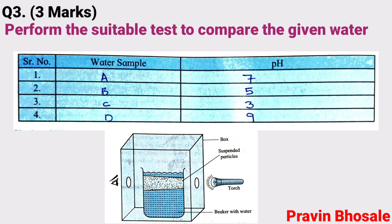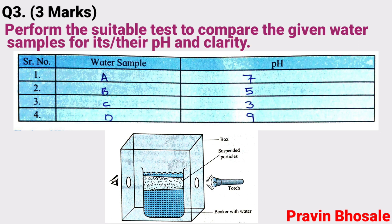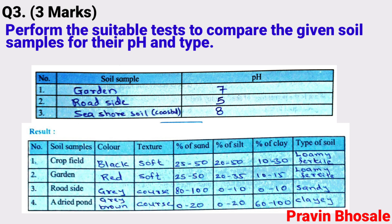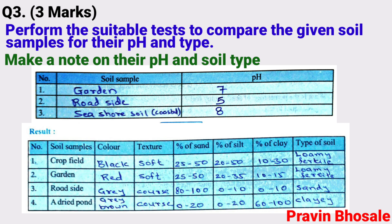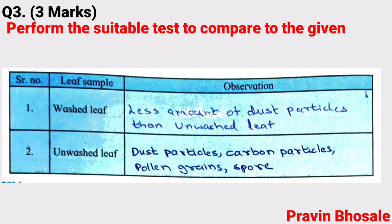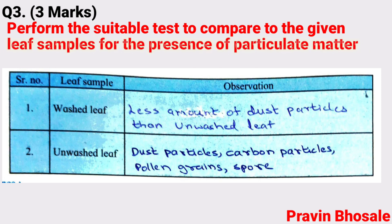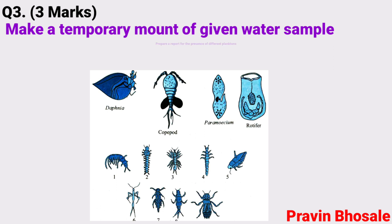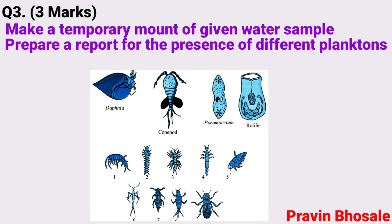Question number three, three marks. The experiments are: perform the suitable test to compare the given water samples for their pH and clarity, and make a note of it. Or perform the suitable test to compare the given soil samples for their pH and type, and make a note on their pH and soil type. Or perform the suitable test to compare the given leaf samples for the presence of particulate matter and make a note of the same. Or make a temporary mount of the given water sample, observe and prepare a report on the presence of different planktons in it.